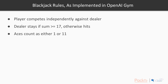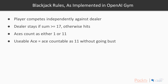Aces can count either as 1 or 11. There's a term 'usable ace,' and the usable ace means that if the player's hand contains an ace and you can count it as 11 without the whole hand going bust — i.e. going above 21 — then it's known to be usable.